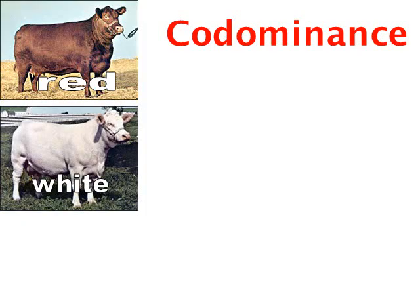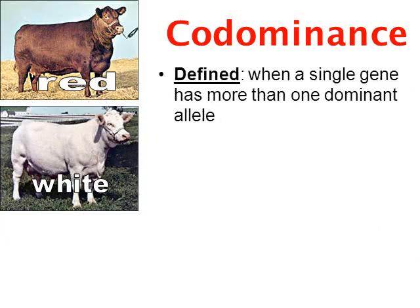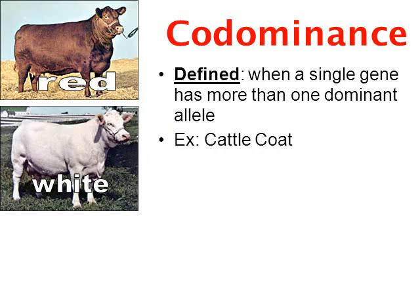Let's first look at the inheritance pattern called codominance. The definition of codominance is when a single gene has more than one dominant allele. If you've seen my other videos before, we've never seen this pattern before, and it was completely unknown to Gregor Mendel as well. From Mendel's experiments, he was looking at flower color — peas either had purple flowers or white flowers. Purple was dominant, white was recessive.